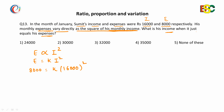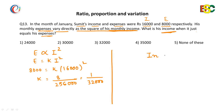So K comes out to be eight thousand over sixteen thousand squared. The three zeros get cancelled, giving eight over sixteen squared, which is two fifty-six, with the remaining three zeros — which equals one over thirty-two thousand.